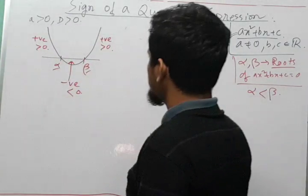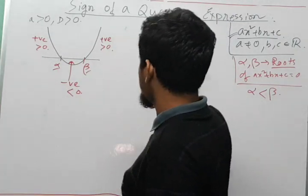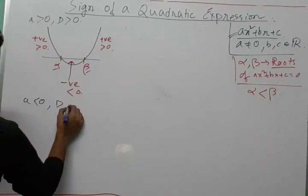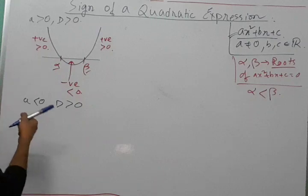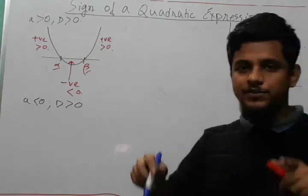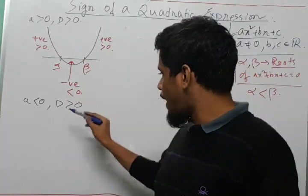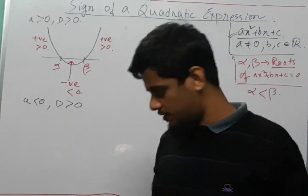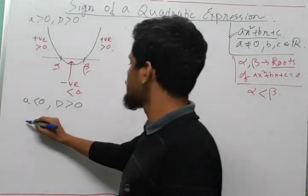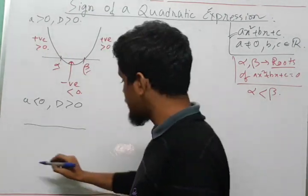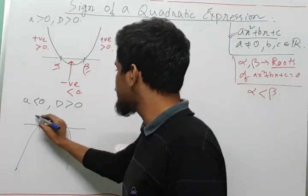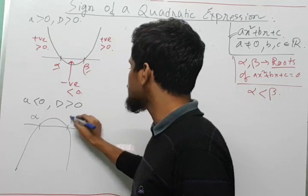The next condition we will understand is what happens when a is less than 0 and D is greater than 0. Since a is less than 0, that implies the curve is opening downwards, and since D is greater than 0, it intersects the x-axis twice. So if this is the x-axis, we have a curve somewhat like this, where this point is basically alpha and this point is beta.